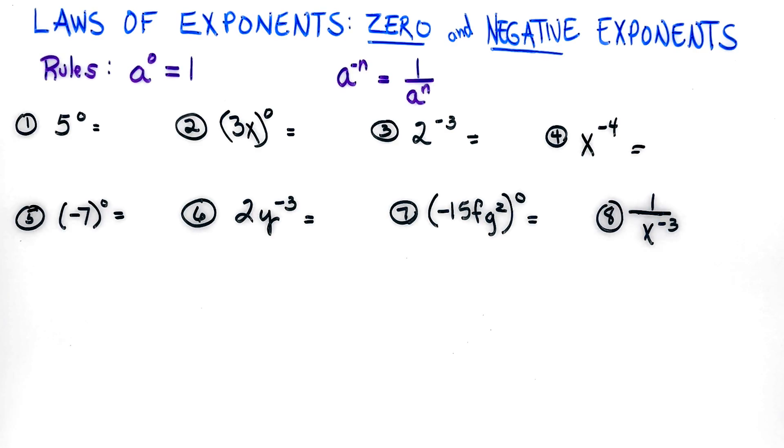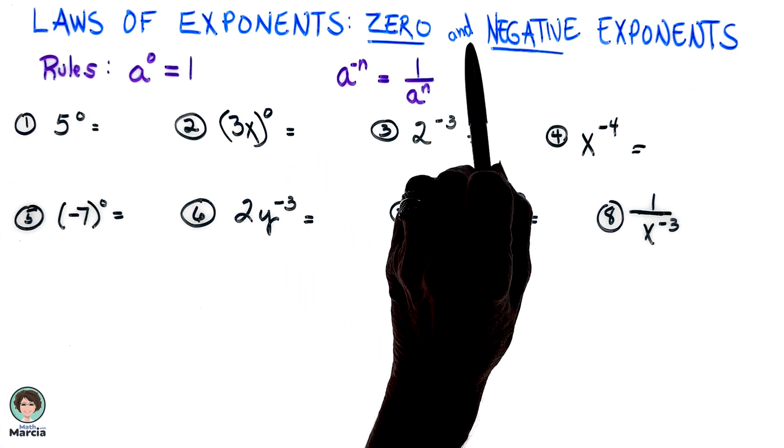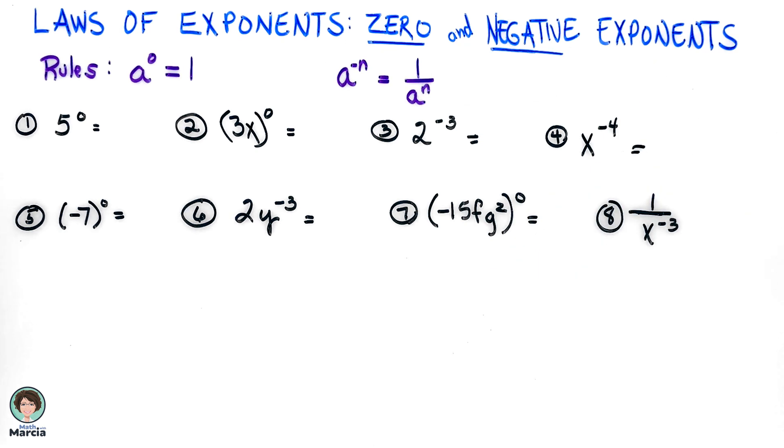For this lesson, we will be talking about laws of exponents when we have a zero or a negative exponent. So let's look at our two rules.